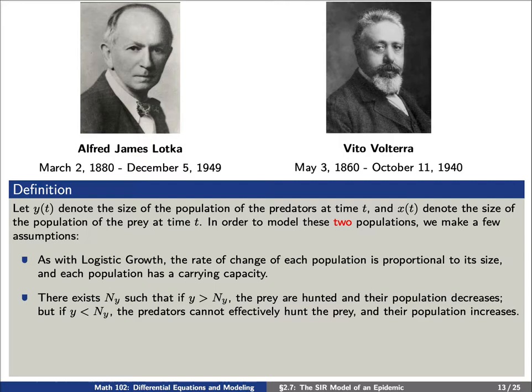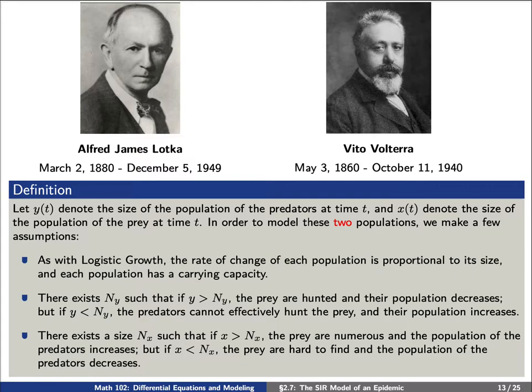Third, there exists another size n_x, such that if x is greater than n_x, then the prey are numerous and the population of predators increases. But if x is less than n_x, then the prey are hard to find, and the population of the predators decreases.